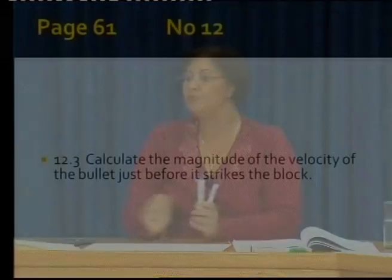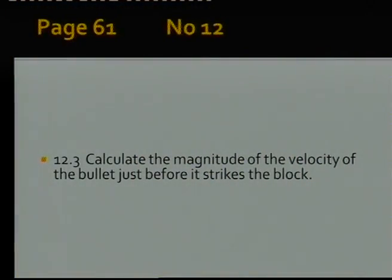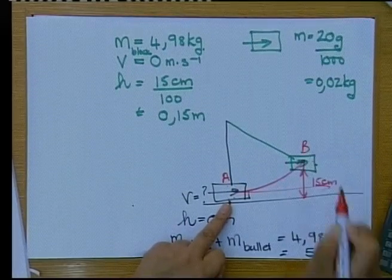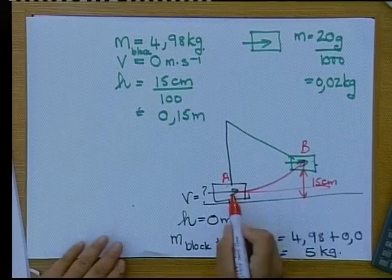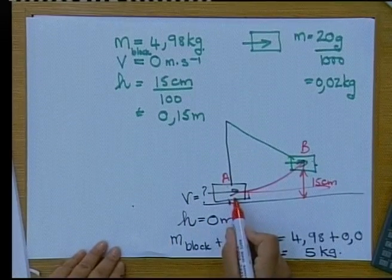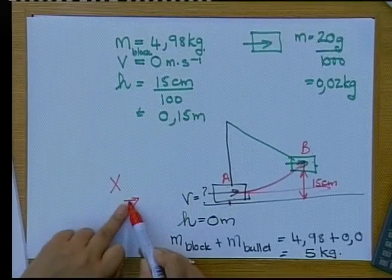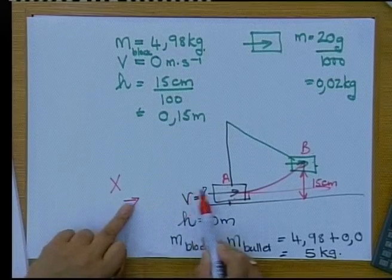The third part of the question is: calculate the magnitude of the velocity of the bullet just before it strikes the block. Going back to our sketch, we saw that the block and bullet moved from point A to point B. Before the collision, the bullet was at point X, traveling until it hit the block.